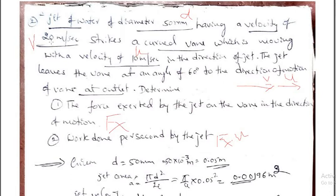The second problem I am solving now. First I will read this problem. A jet of water of diameter 50 mm — it means D — having a velocity of 20 meter per second, that is V. This strikes a curved vane which is moving with the velocity 10 meter per second, that is U, in the direction of the jet. The jet is striking in the direction of the moving vane, so at inlet the jet is acting and striking horizontally.